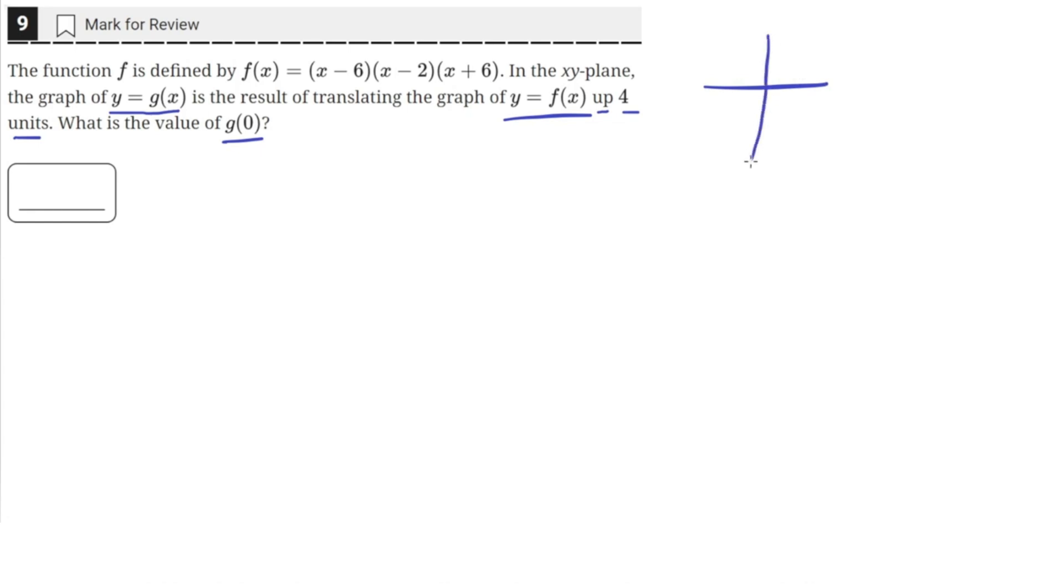So say f(x) was some kind of line that looked like this in the xy-plane, then g(x) would just be the line translated up 4 units. So every point on f(x) would just be translated up. So g(x), the translated graph, would just be equal to f(x) plus 4.